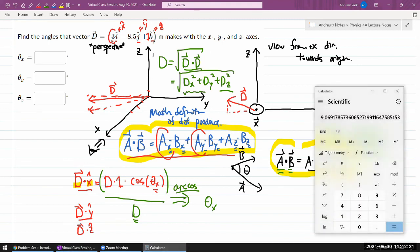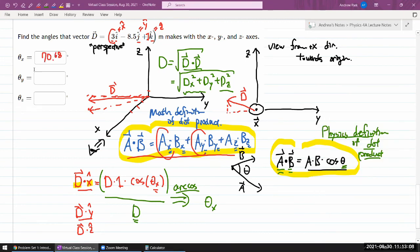So for the d dot x, that's going to be three. So let me start from there, three. So that's the number that's here. I'm going to divide it by d. So divide it by the number I stored into memory. That's the ratio. And once I put it through the arc cosine, that will give me theta x. So arc cosine. So 70.68 degrees.